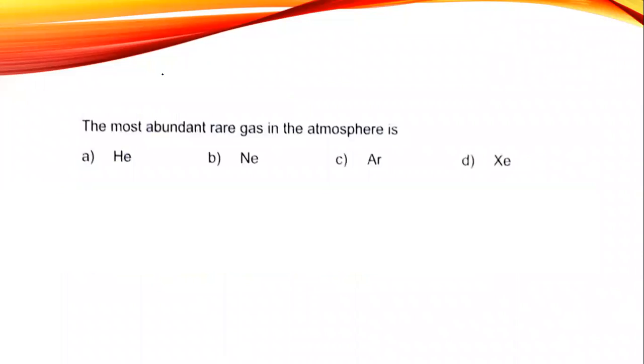Next question is a direct question. Most abundant rare gas in the atmosphere is argon. All these are rare gases, but the most abundant in the atmosphere is argon.